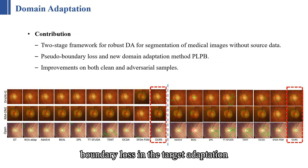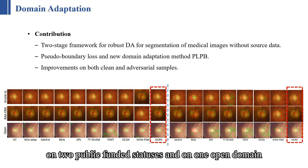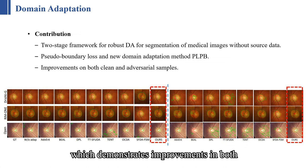Secondly, we utilize the pseudo-boundary loss in the target adaptation stage and develop a new domain adaptation method, PLPB. Lastly, we evaluate the efficacy of PLPB on two public fundus datasets and one open domain, which demonstrates improvements in both clean and adversarial samples.